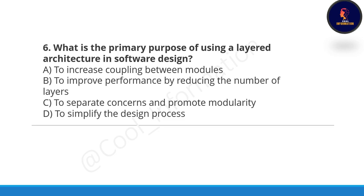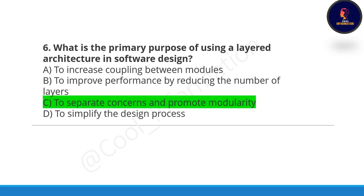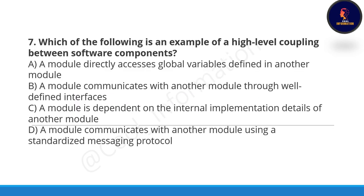Next question: what is the primary purpose of using a layered architecture in software design? Layered architecture is used to separate concerns and promote modularity, so option C is correct. Next question: which of the following is an example of high-level coupling? A module that is dependent on the internal implementation details of another module is actually a high-level coupling example, so option C is correct.